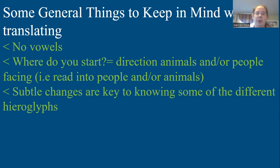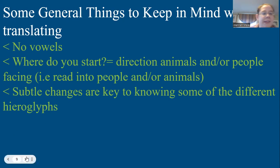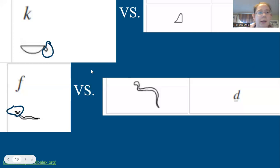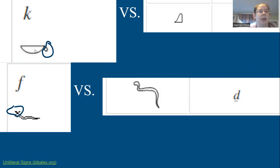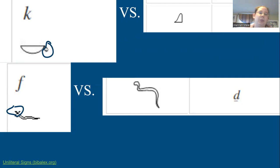For some of the hieroglyphs, you really have to be aware of subtle changes, because it's that detail that really matters. For instance, you have what I call a 'regular K' — this unilateral — and in particular, you'll notice that it has a little tail on either the left or the right. That's how you know you're looking at the regular K.